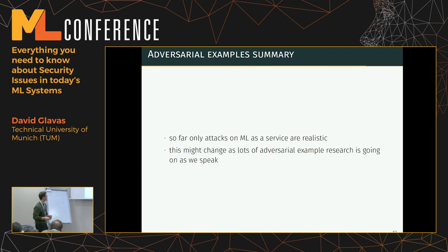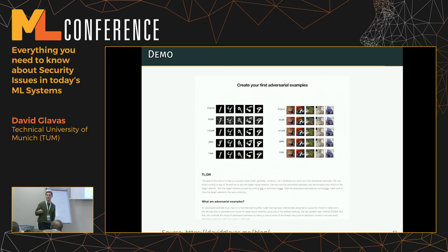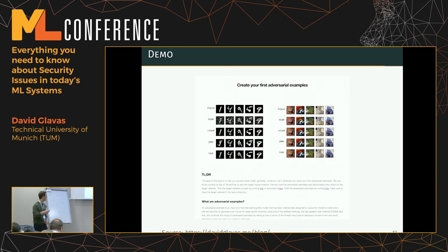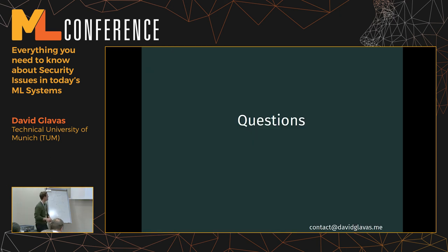This may change — many adversarial example papers are being published at top ML conferences, with new defenses and evaluations increasing in number. As of today, only ML-as-a-service attacks are somewhat realistic. If you're interested in specific algorithms, I wrote a blog post that walks through code: training a small neural network, generating adversarial examples, visualizing them next to originals, and showing the influence on model confidence.